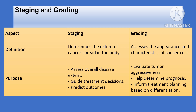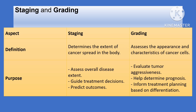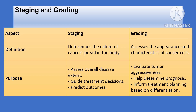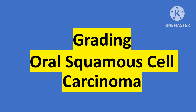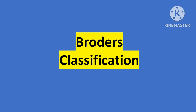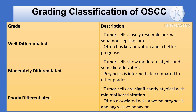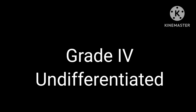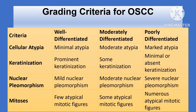Before going further, let's clarify the difference between staging and grading. Staging assesses the extent of cancer spread in the body, informing treatment options and prognosis. Grading focuses on the appearance and differentiation of cancer cells, helping predict tumor aggressiveness. For oral squamous cell carcinoma, we often use Broader's classification, which categorizes tumors into four grades: Grade 1 is well differentiated, Grade 2 is moderately differentiated, Grade 3 is poorly differentiated, and Grade 4 is undifferentiated. The less differentiated the cells, the more aggressive and invasive the cancer tends to be.